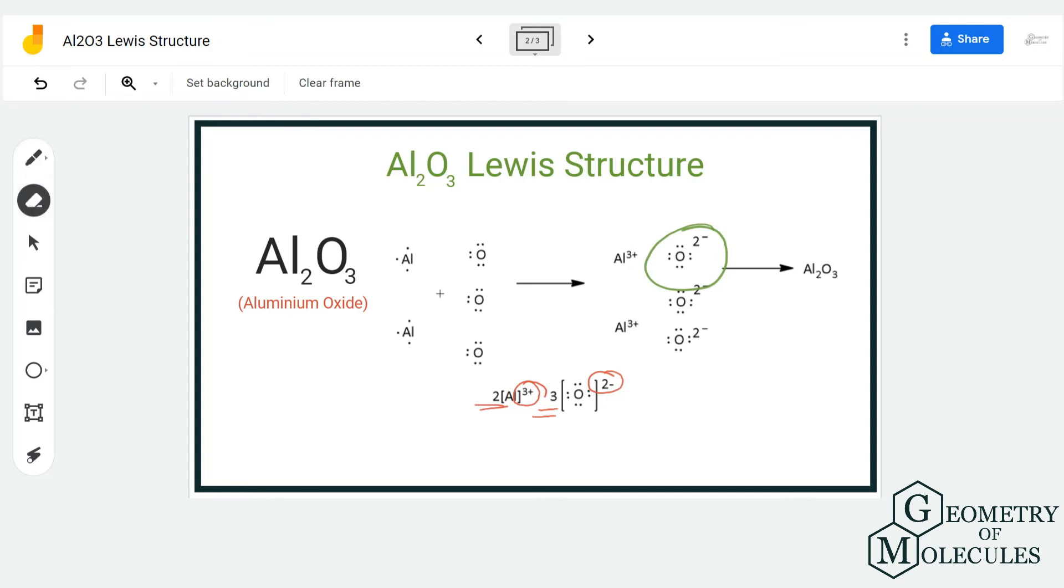Now, if you look at the net charge or the complete charges on this compound, it will be zero because two times plus three is plus six, and three times minus two is minus six. So the net charge on this compound is zero. And this is the Lewis structure, or this is how you write a Lewis structure for Al2O3.